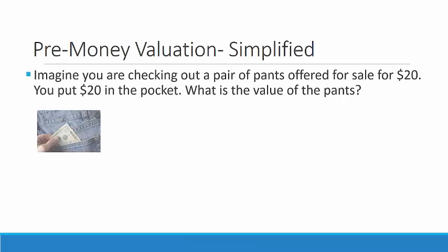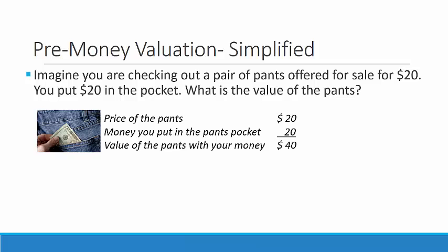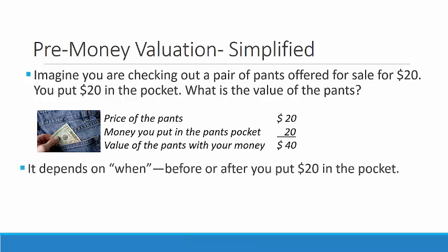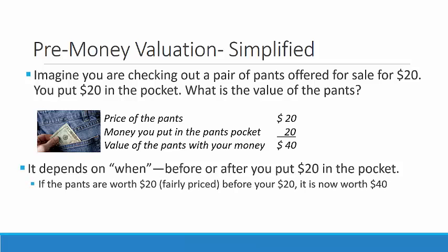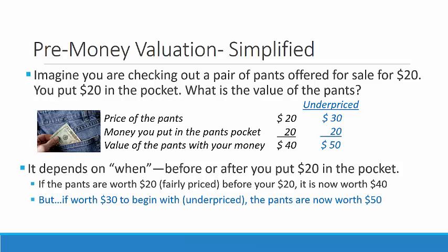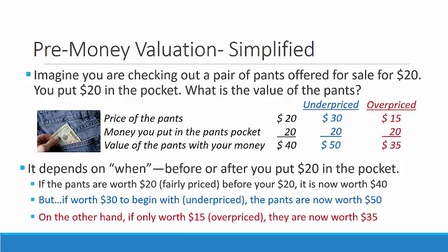Pre-money valuation simplified. Imagine you are checking out a pair of pants offered for sale for $20. You put $20 in the pocket. What is the value of the pants? Clearly it depends on when — before or after you put $20 in the pocket. If the pants were worth $20, they were fairly priced before your $20, and they are now worth $40. But if they were worth $30 to begin with — in other words, they were underpriced at $20 — the pants are now worth $50. On the other hand, if the pants were only worth $15, they were overpriced at $20, and they are now worth $35.